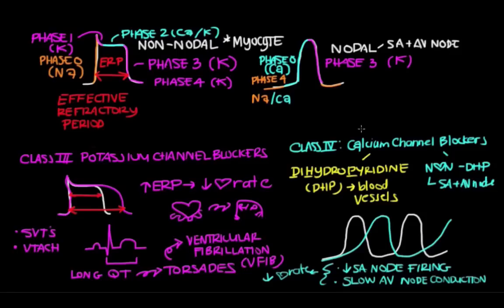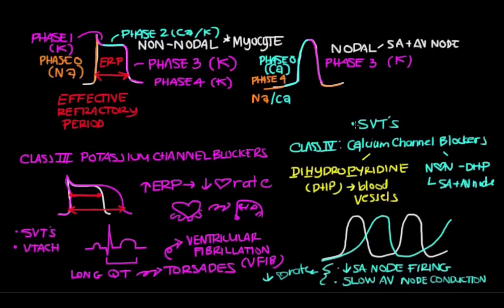Since calcium channel blockers slow heart rate, they work great for SVTs. You might wonder why they don't work for tachycardias like VTAC — that's because studies have found that potassium channel blockers do a better job at treating VTAC than calcium channel blockers. So if somebody has VTAC, you wouldn't reach for a calcium channel blocker first.